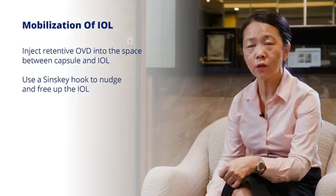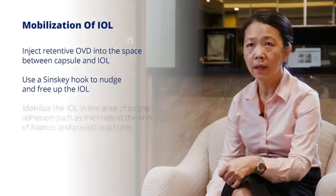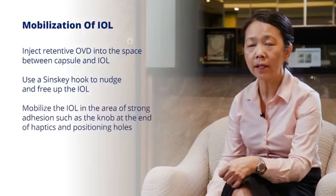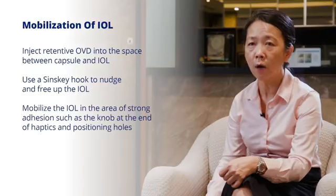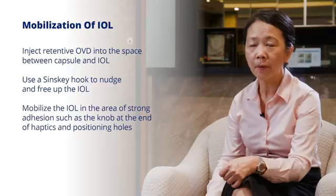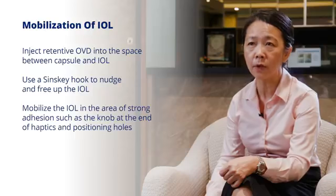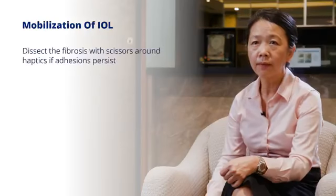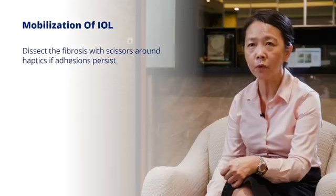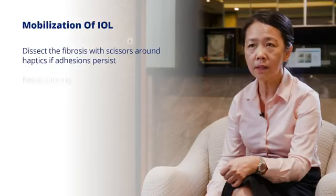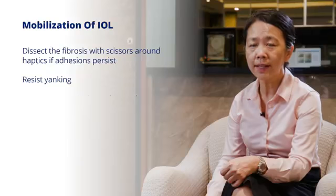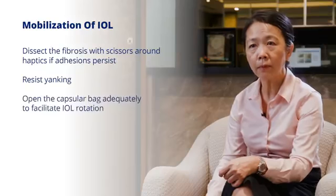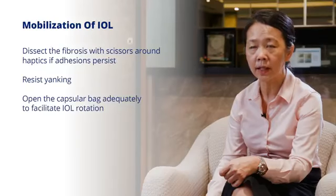Use a Sinski hook to nudge and to free up the intraocular lens. Mobilise the IOL especially in areas of strong adhesion such as the knob at the end of the haptic or positioning holes, because fibrosis may have gone through these holes to strongly cause adhesion between the anterior and posterior capsules. If there is any fibrosis around the haptics, do be careful to dissect this with scissors and do not yank the lens if it is adherent, because you may lose zonules. Open up the capsular bag adequately to facilitate IOL rotation.